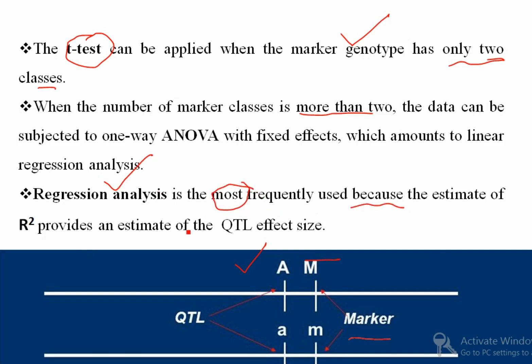Regression analysis is the most frequently used method because it provides an estimate of R-squared — the coefficient of determination — which gives the estimate of the QTL effect size, meaning what percentage of phenotypic variation is explained by this QTL. That is why regression analysis is important in SMA.